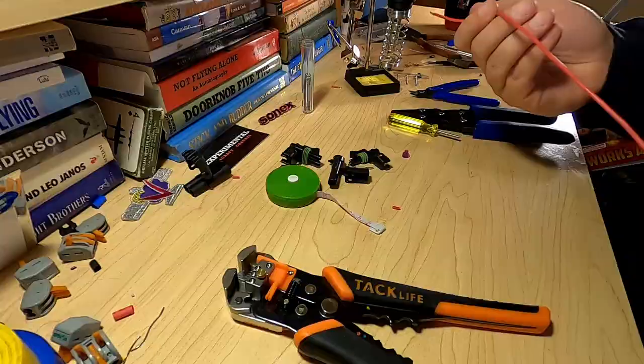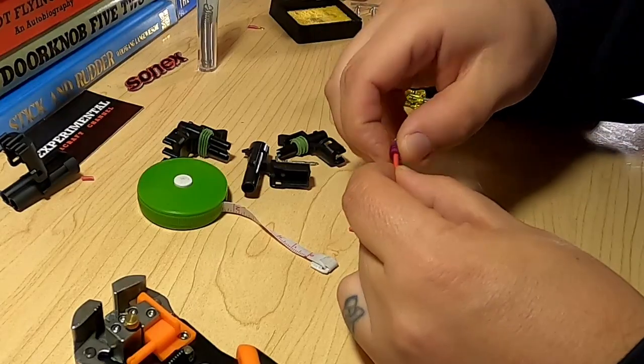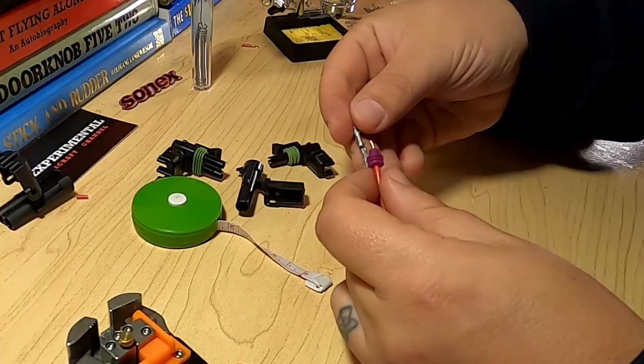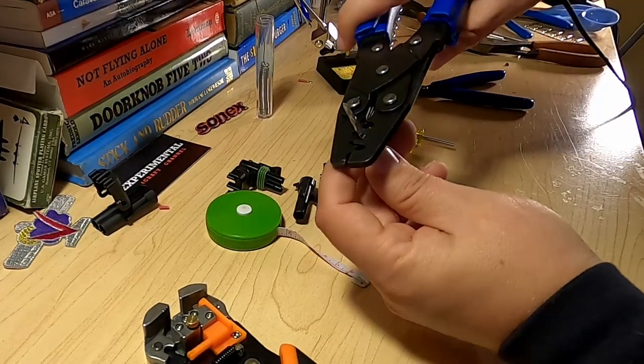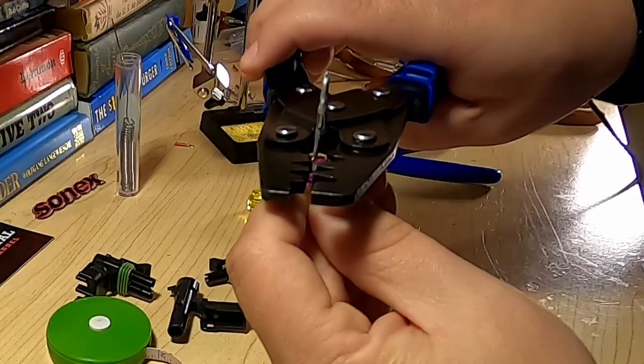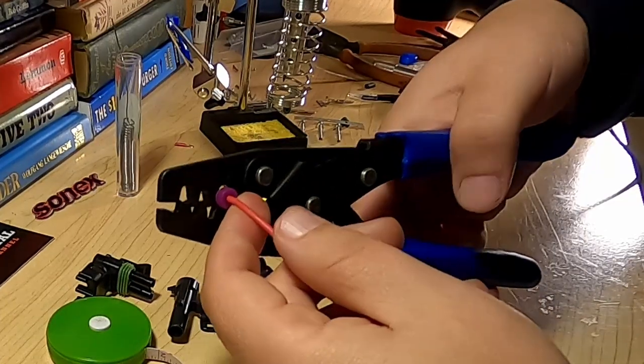Do the same thing on the other side. Check our twist, pop our seal on, check our twist again. Now we got our male terminal. Number three on our crimper, back to number five.